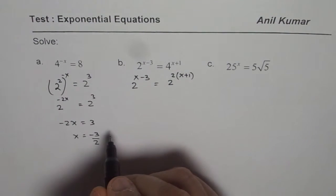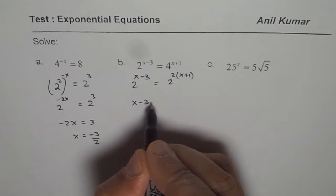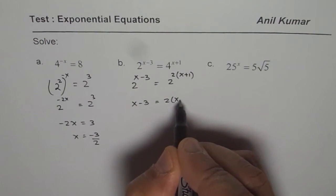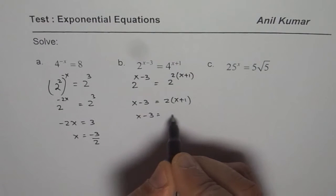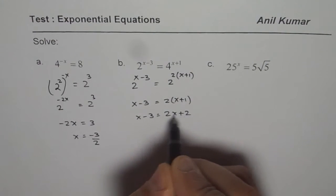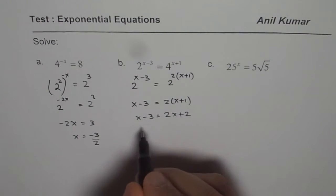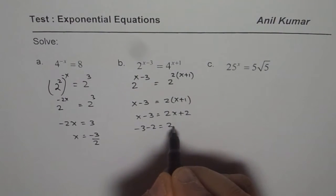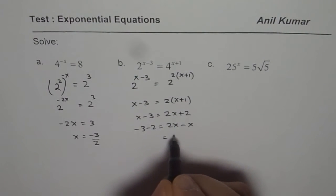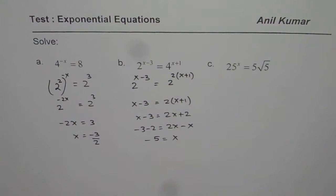Now we can equate the exponents. So we get x minus 3 equals to 2 times x plus 1, or x minus 3 equals to 2x plus 2. Solving this, bringing 2 to the left side, we get minus 3 minus 2 equals to 2x minus x, or x equals to minus 5. So x equals to minus 5 is our solution.